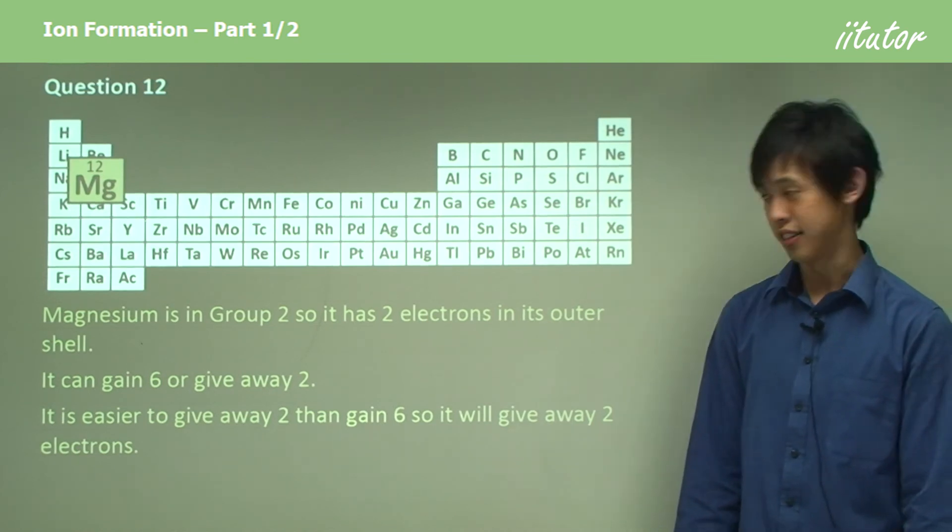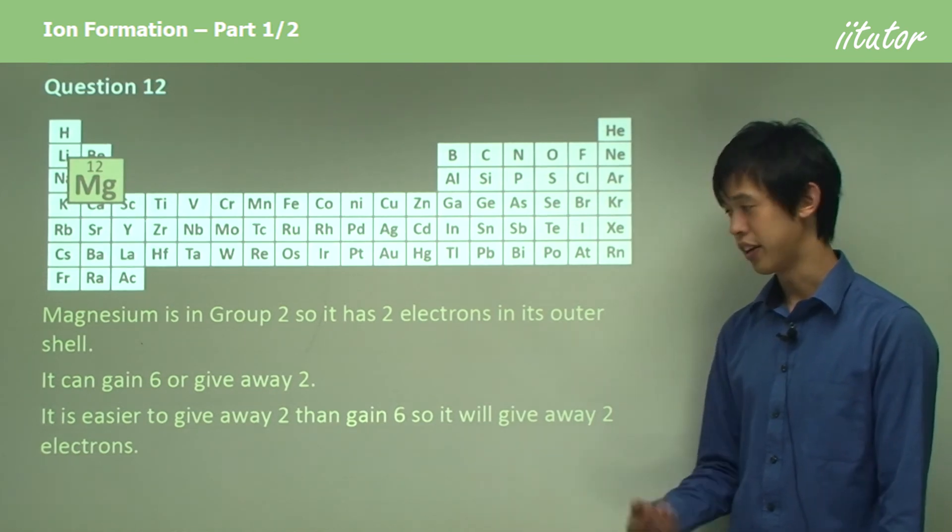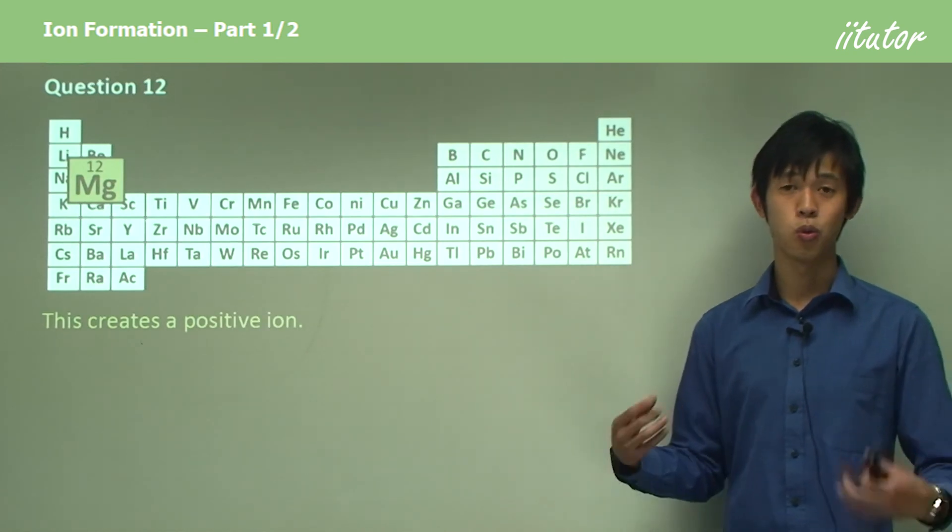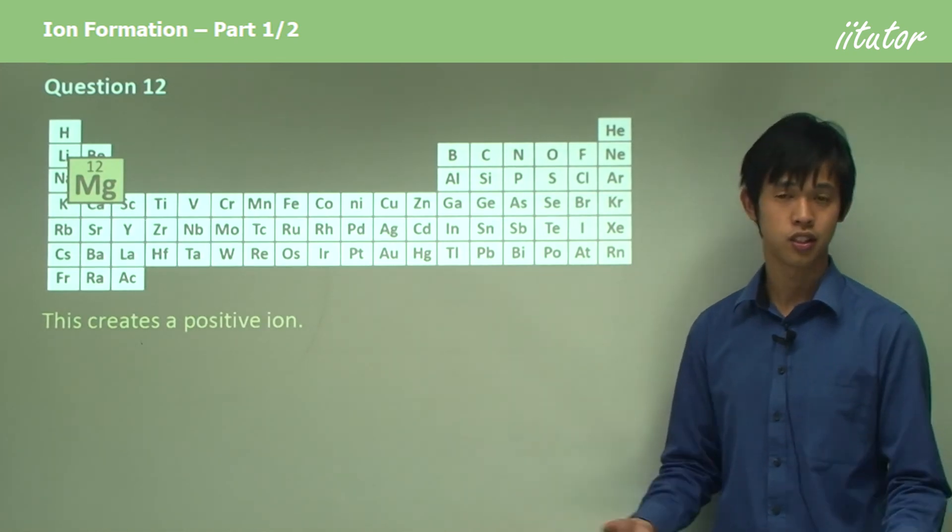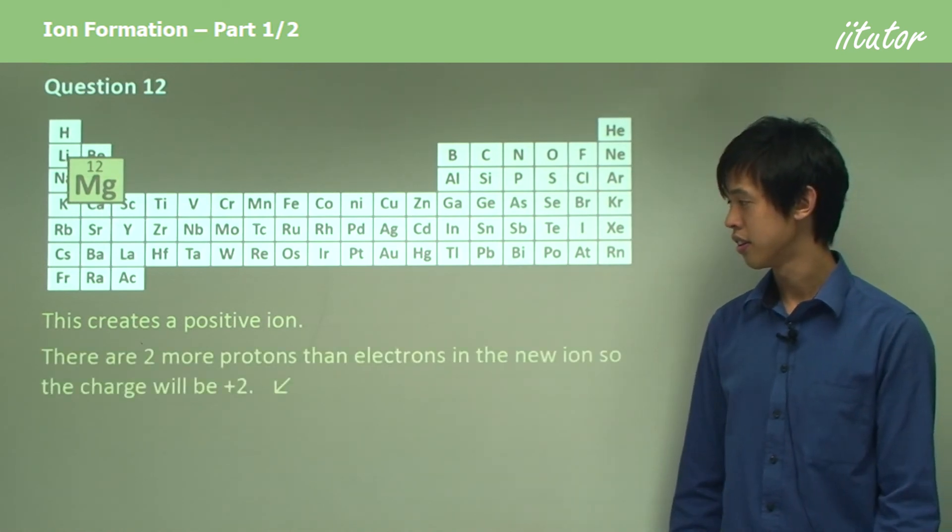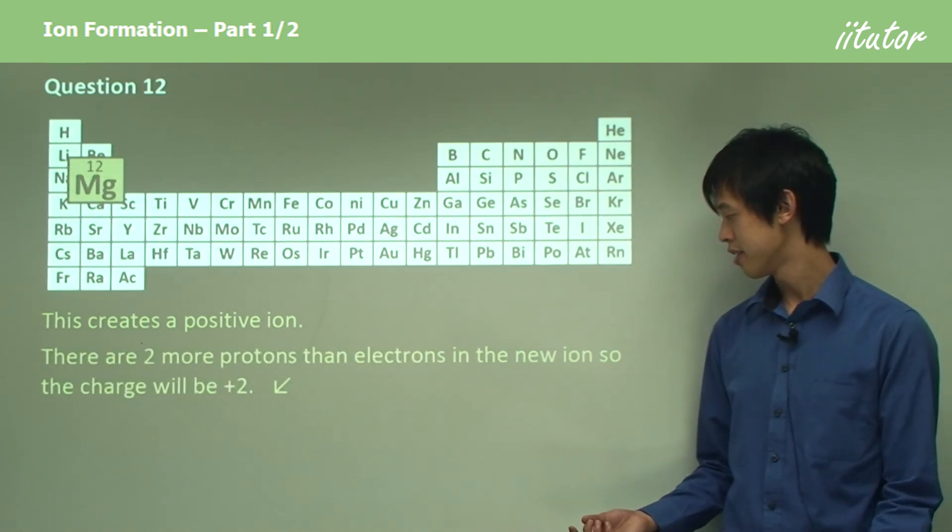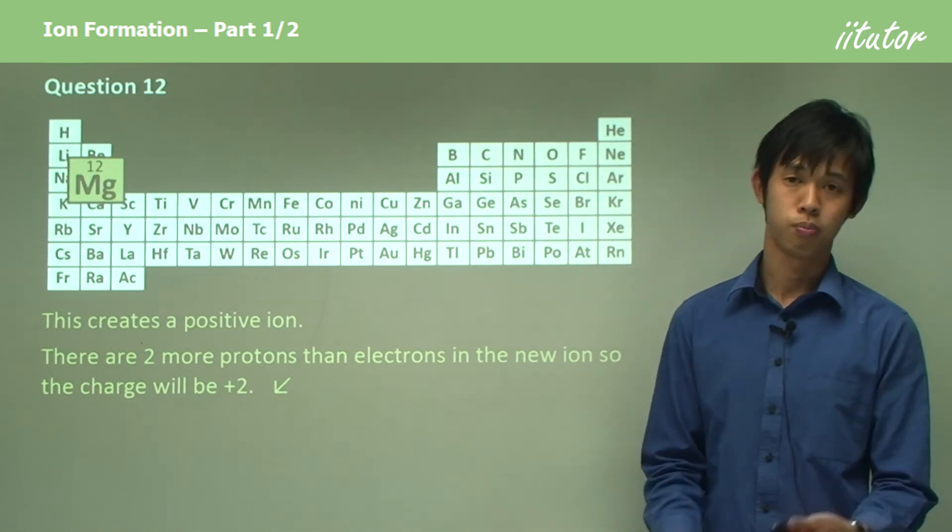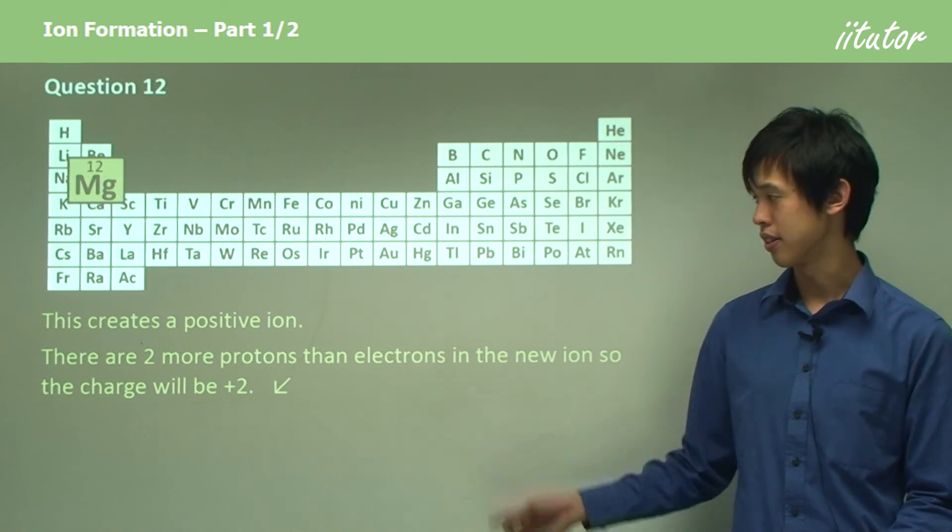Now it's easier to give away two than it is to gain six, so it will give away those two electrons. If it gives away electrons, there'll be more positive charges than negative charges, so it'll be a positive ion. And since there are two more protons than electrons, the charge will be two plus.